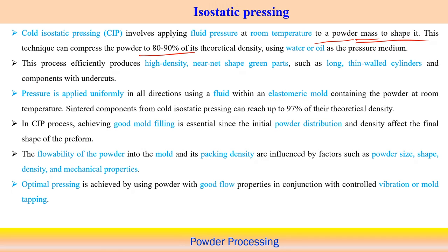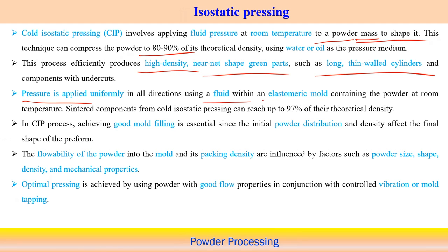Cold isostatic pressing effectively produces very high density components — 80 to 90 percent of theoretical density — or near-net-shape green parts. Even complex shapes, very long, and thin-walled cylinder components can be produced. The powder is kept within an elastomeric mold and fluid pressure is applied at room temperature. After isostatic pressing followed by sintering, it is possible to achieve 97 percent of theoretical density.